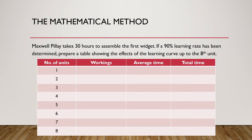Let us try this out using an example. We are going to use the same example from the cumulative doubling and graphical approaches. Again, we have Maxwell Pillay taking 30 hours to assemble the first widget. There is a 90% learning rate, and we are required to prepare a table showing the effects of the learning curve up to the 8th unit.